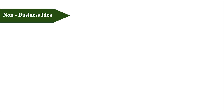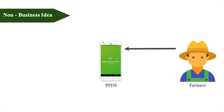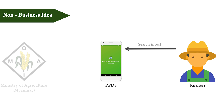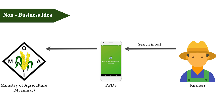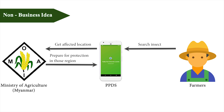For the non-business use case, when farmers search for an insect, the Ministry of Agriculture will get the further location of the insect. The Ministry can then prepare for production in that region and share the diagnosis plans with the farmers through the application.